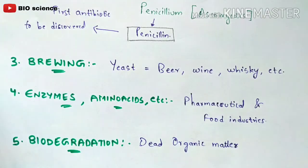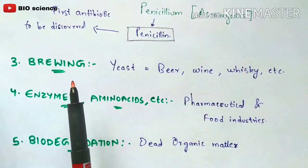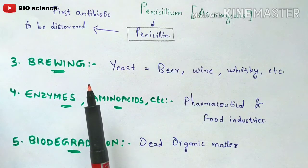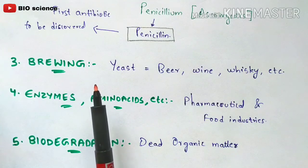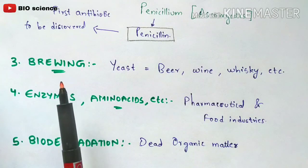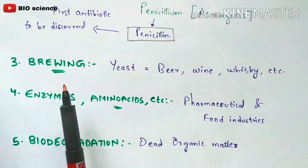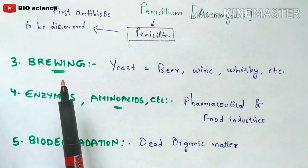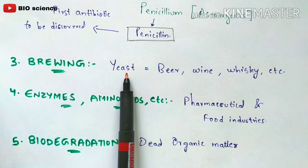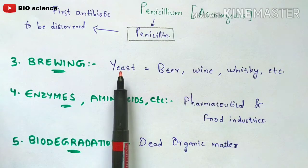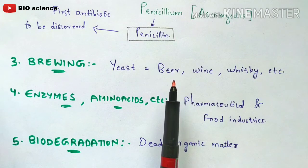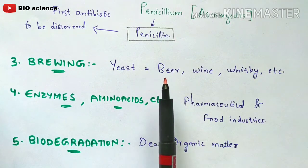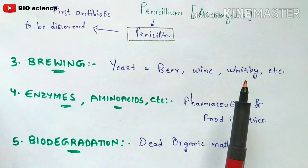The third use is in the brewing industry. The brewing industry is mainly involved in the preparation of beer, wine, and whiskey. Fungi plays a major and vital role in brewing industries. For example, yeast — which is considered a fungi — is mainly used for the preparation of beer, wine, whiskey, and other alcoholic products.